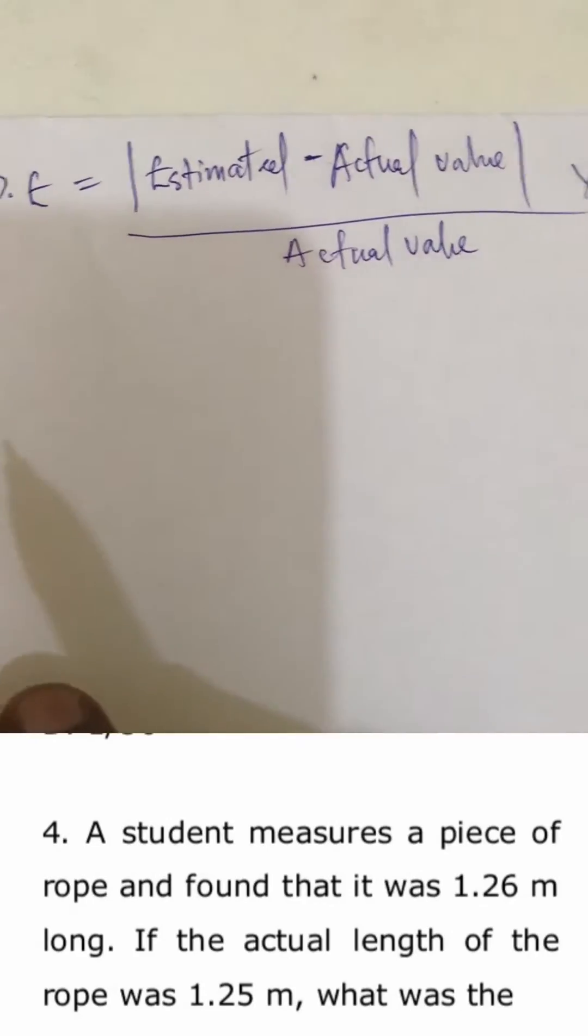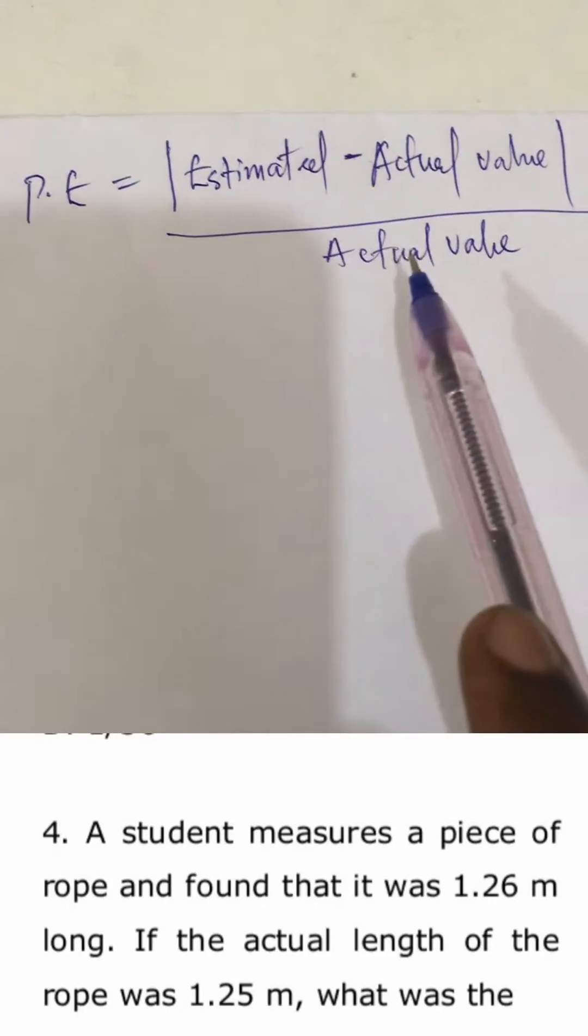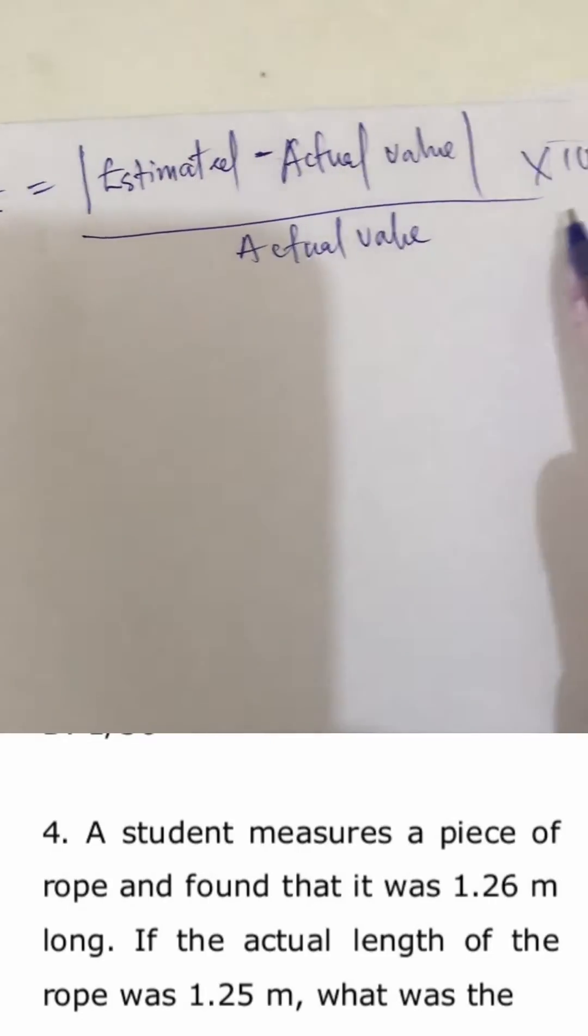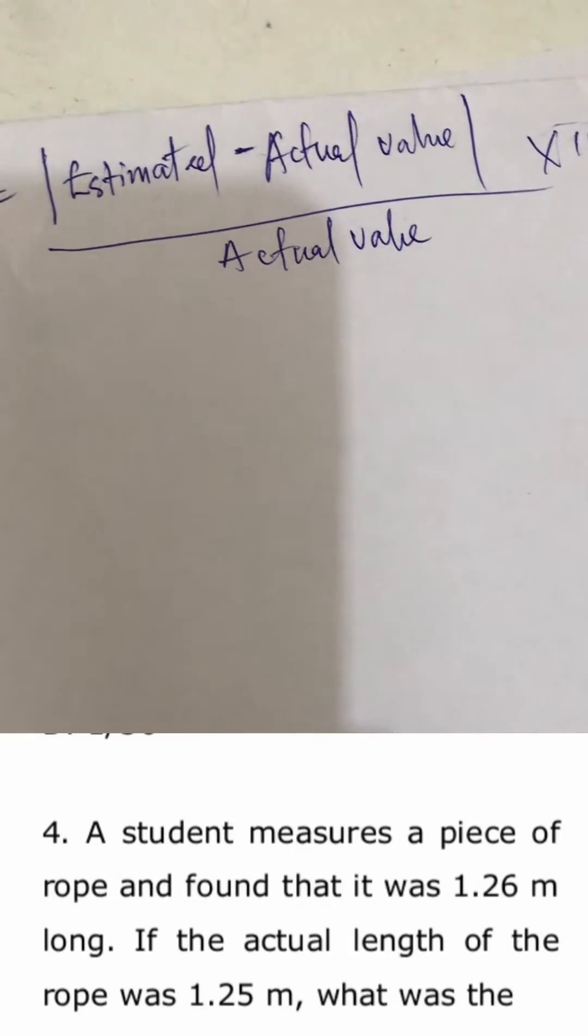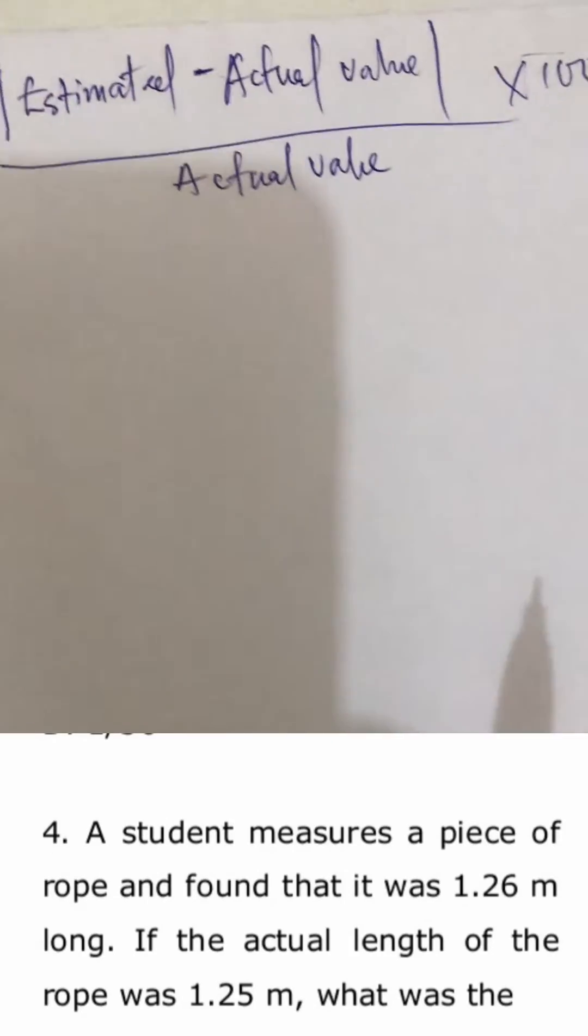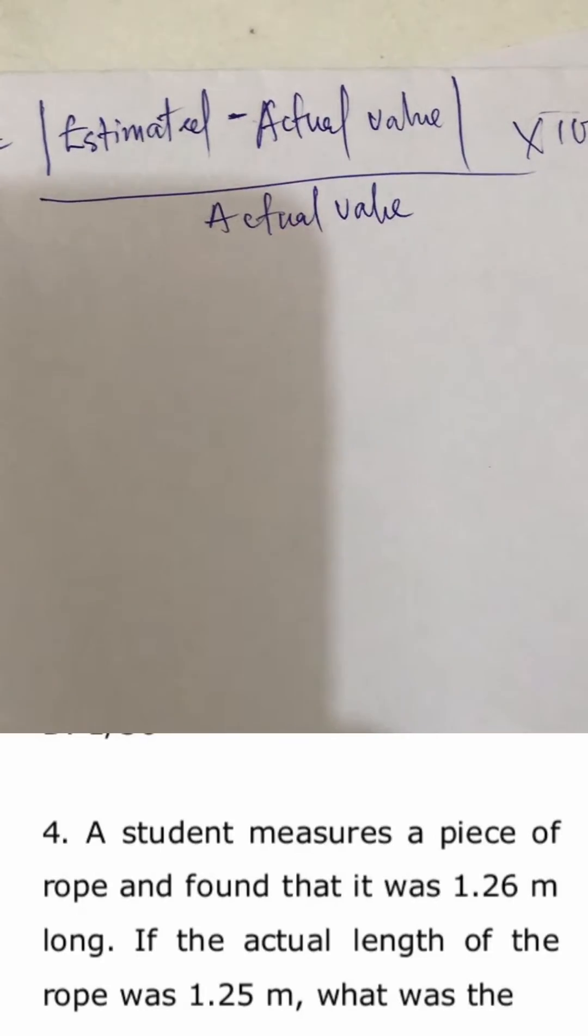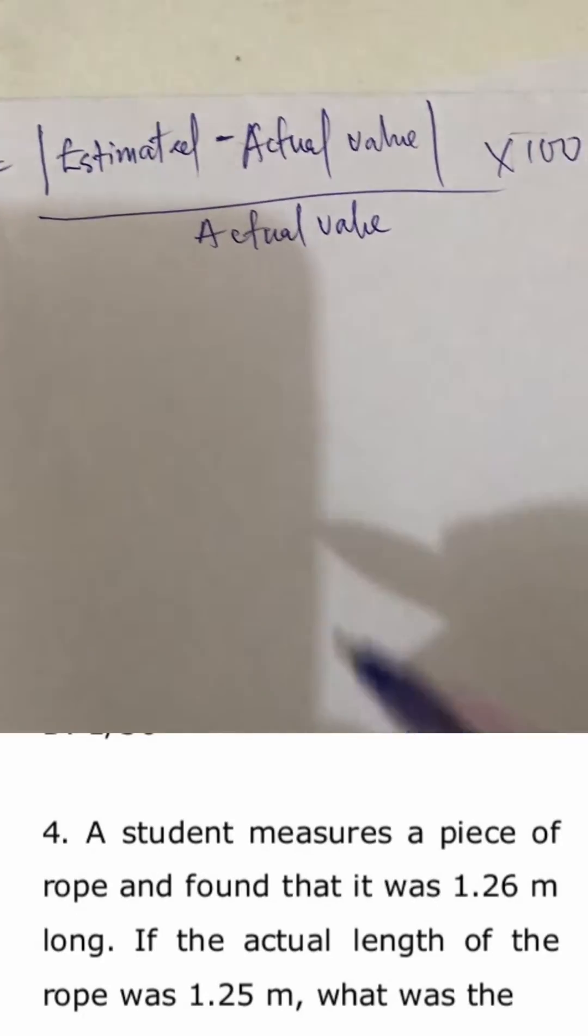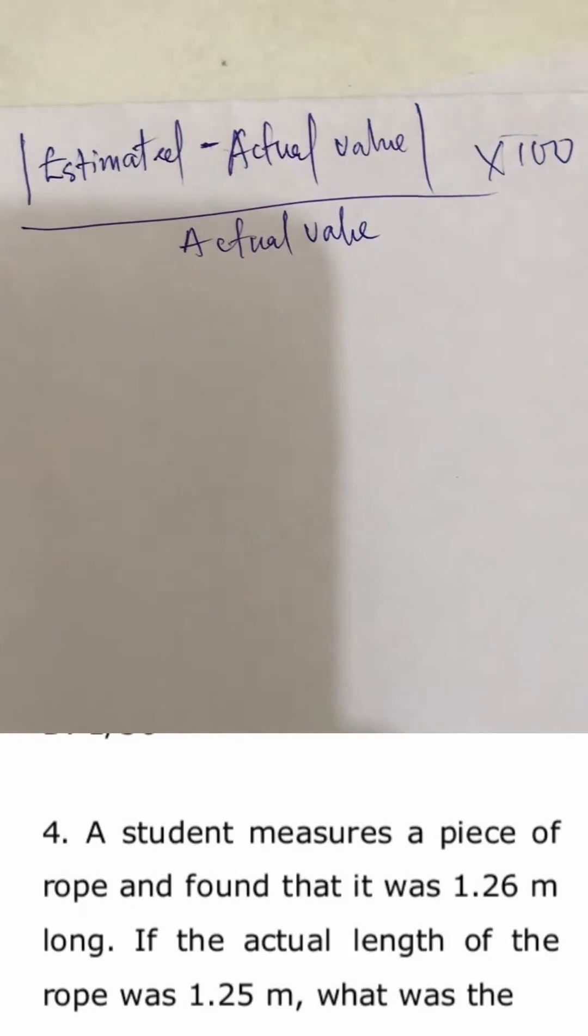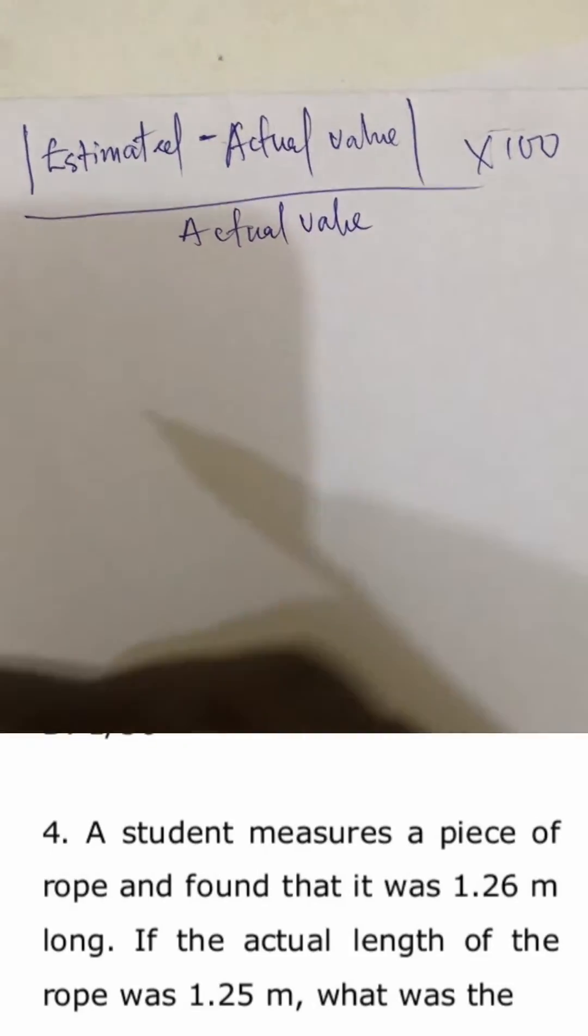This is the formula for the percentage error. This shows that the error over the actual value times 100. Looking at the question, a student measures a piece of rope and found it was 1.26 long, and if the actual length of the rope was 1.25.